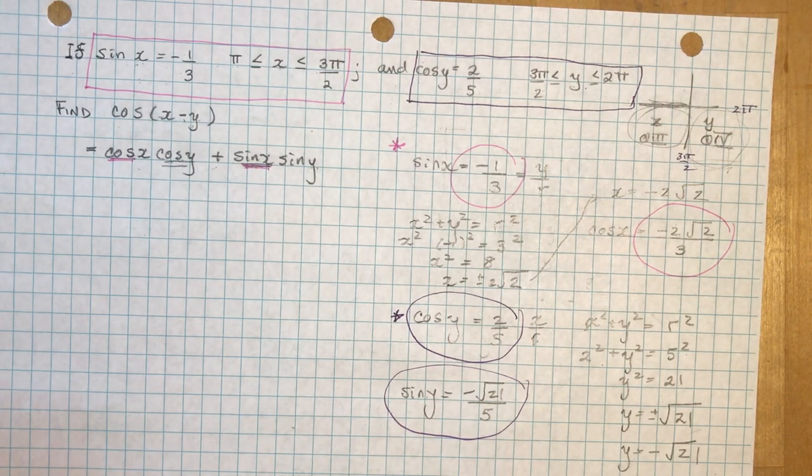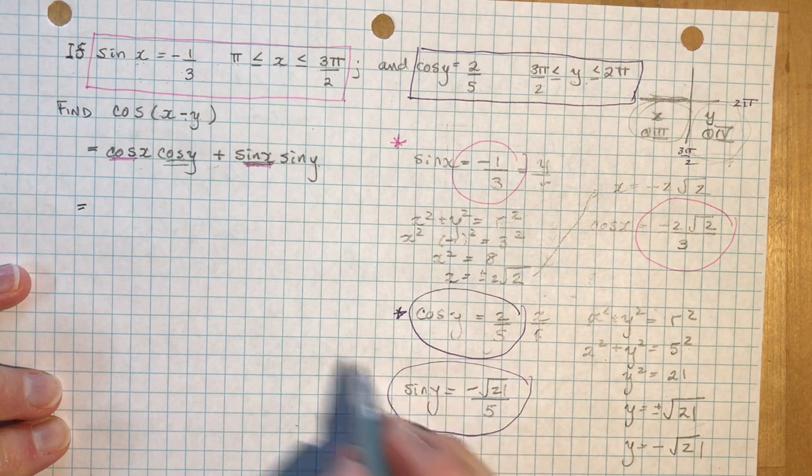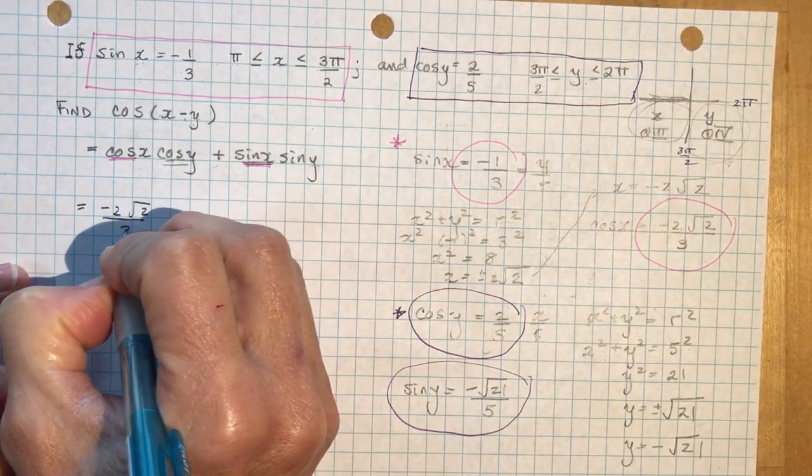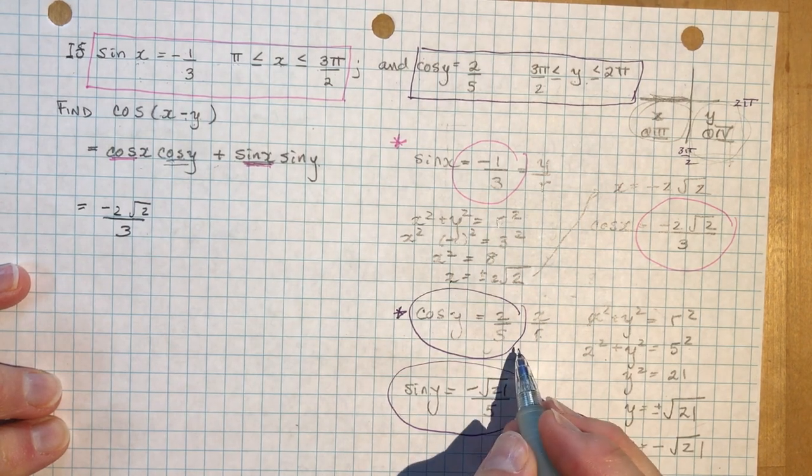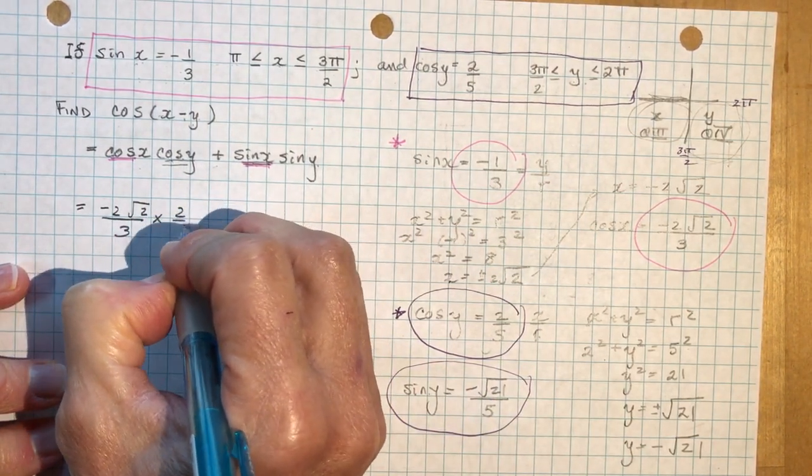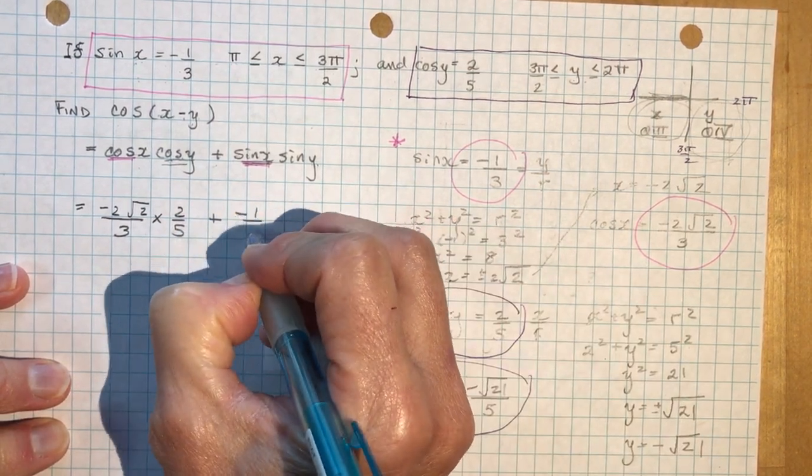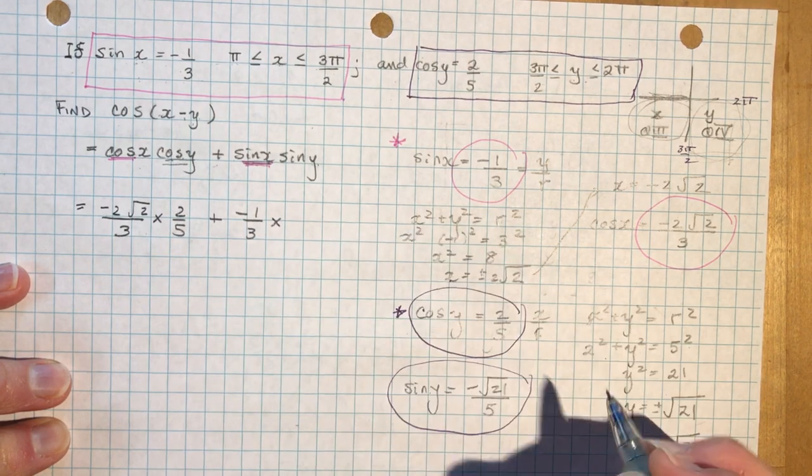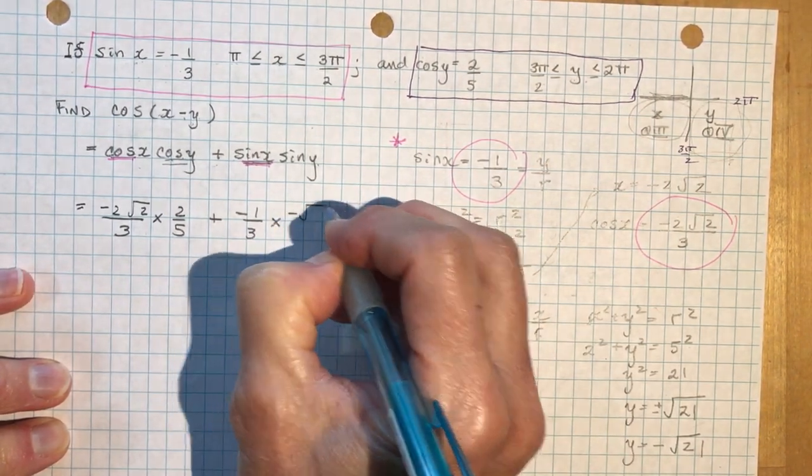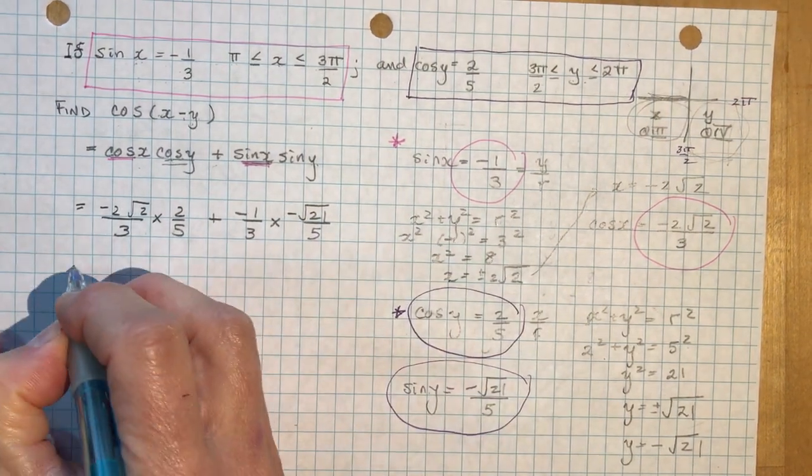All you have to do is plug it into the equation. So cos x was minus 2 root 2 over 3. The cos of y is 2 over 5. And to that I'm going to add the sine of x, which is minus 1 over 3, times the sine of y, which is minus root 21 over 5.